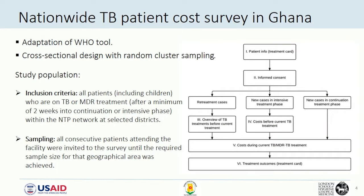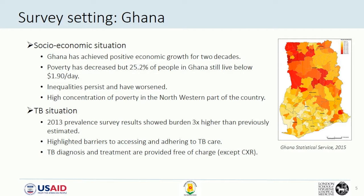We adopted the tool in Ghana and conducted a cross-sectional, nationally representative survey among patients on treatment within the NTP network. Despite positive economic growth over the past two decades, Ghana is characterized by a quarter of its population living below the poverty line and striking inequalities. A prevalence survey conducted in 2013 found that the burden of disease is in fact three times higher than previously thought, with high barriers to accessing and adhering to TB care.